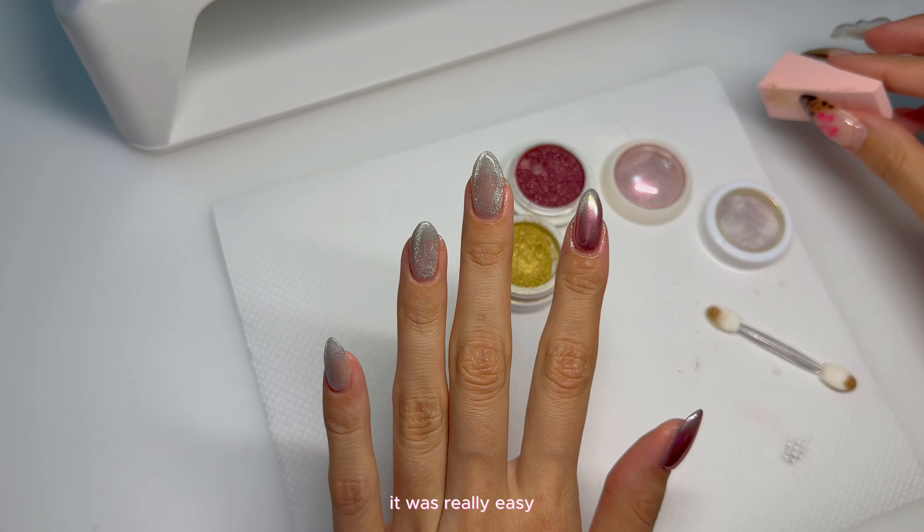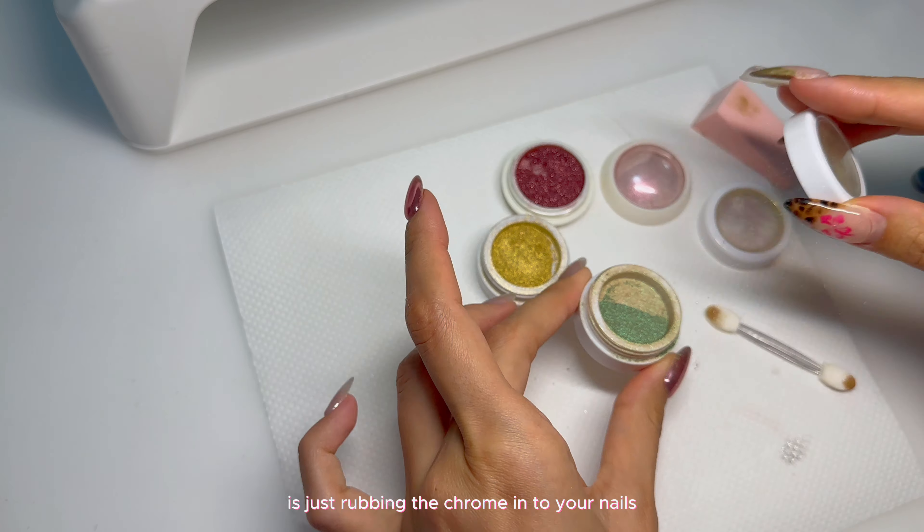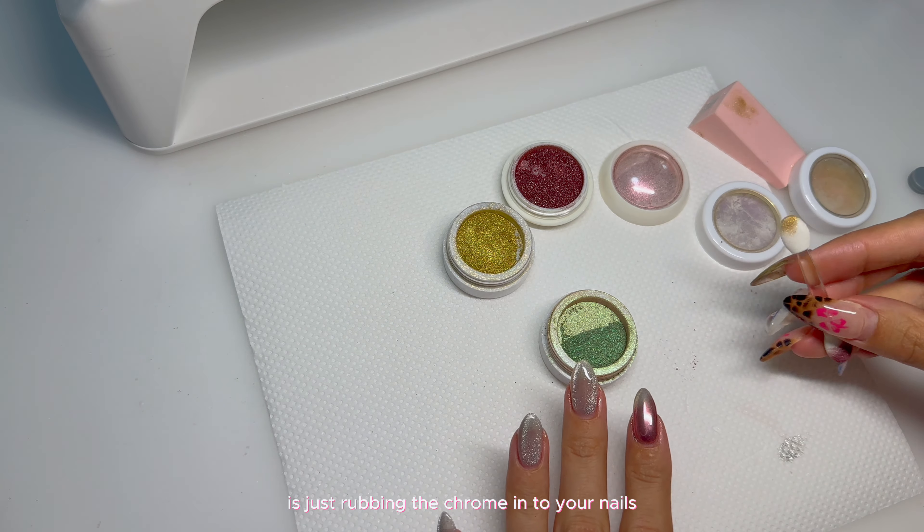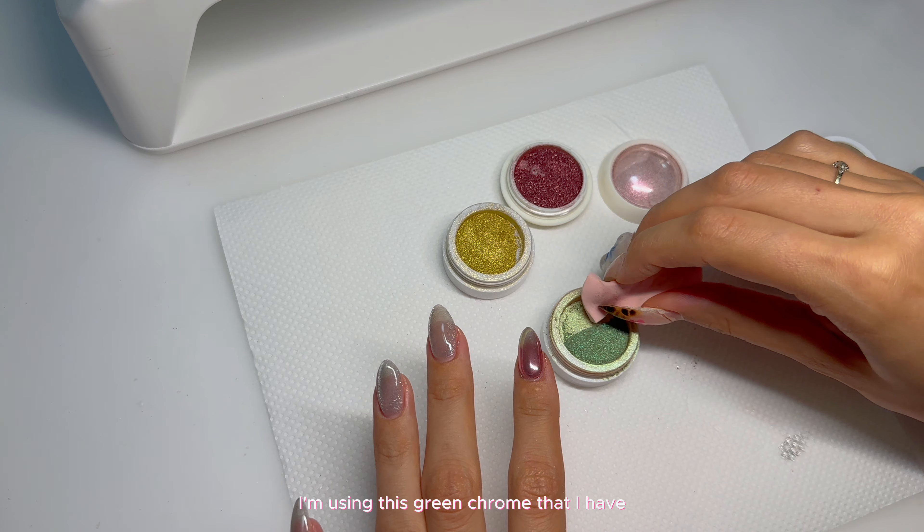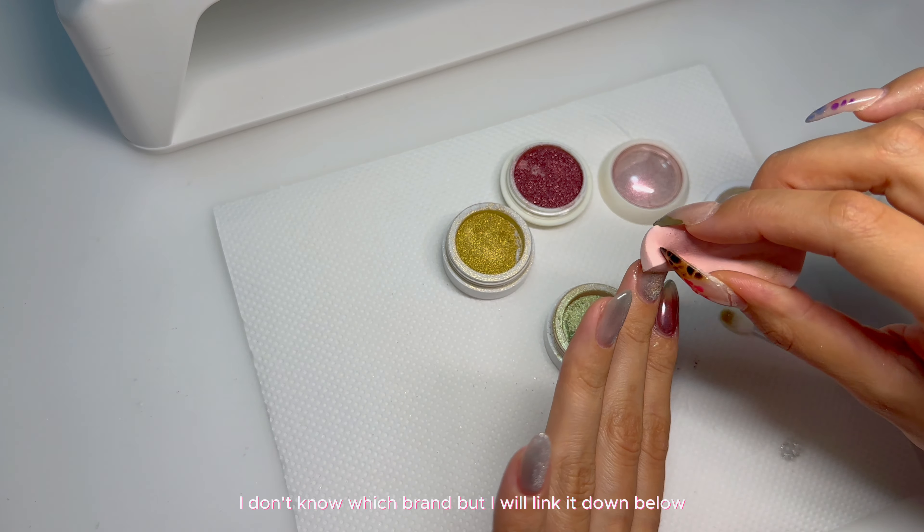I'm going to mix the yellow chrome with the pink chrome and kind of give it that fade. It was really easy. I feel like this is the easiest step out of the whole thing, is just rubbing the chrome into your nails.